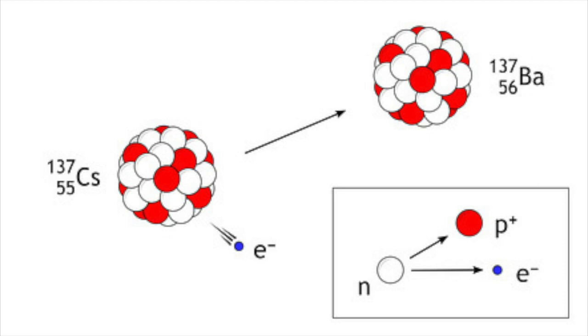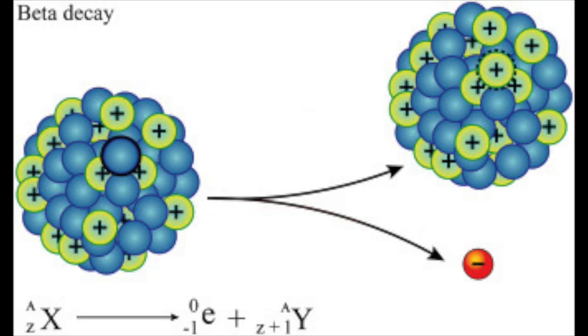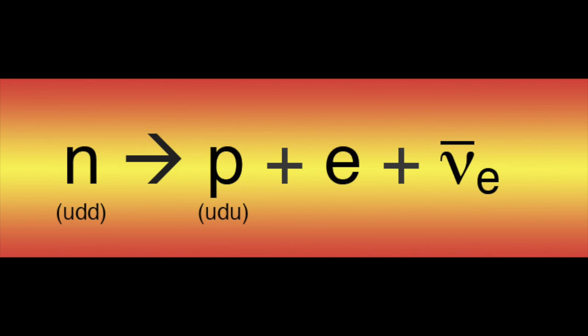Beta decay comes in a few types. In a nutshell, beta particles are emitted when the neutron to proton ratio is irregular in an atom, with particle emission happening to regulate the ratio. How can subatomic particles change into one another?